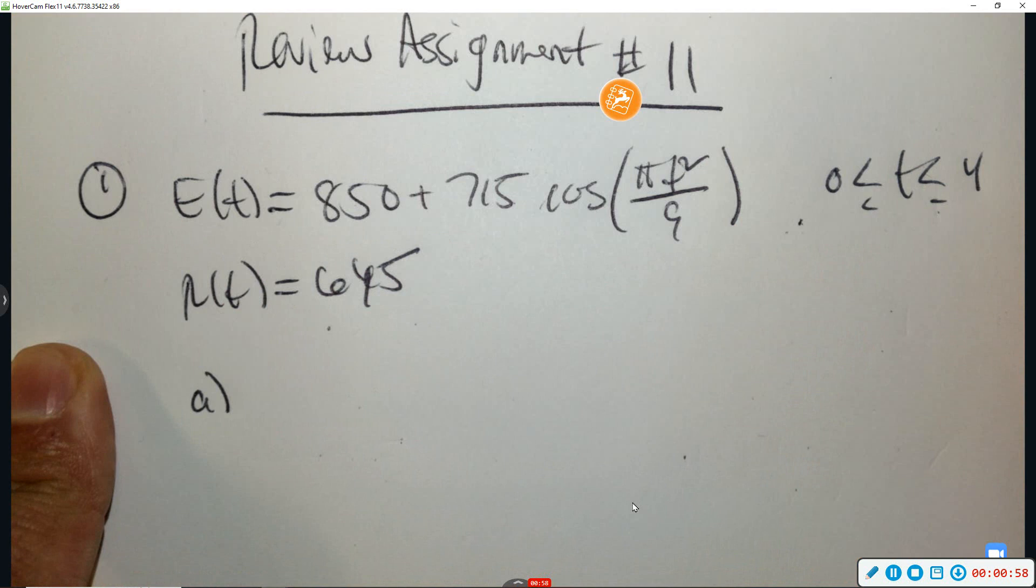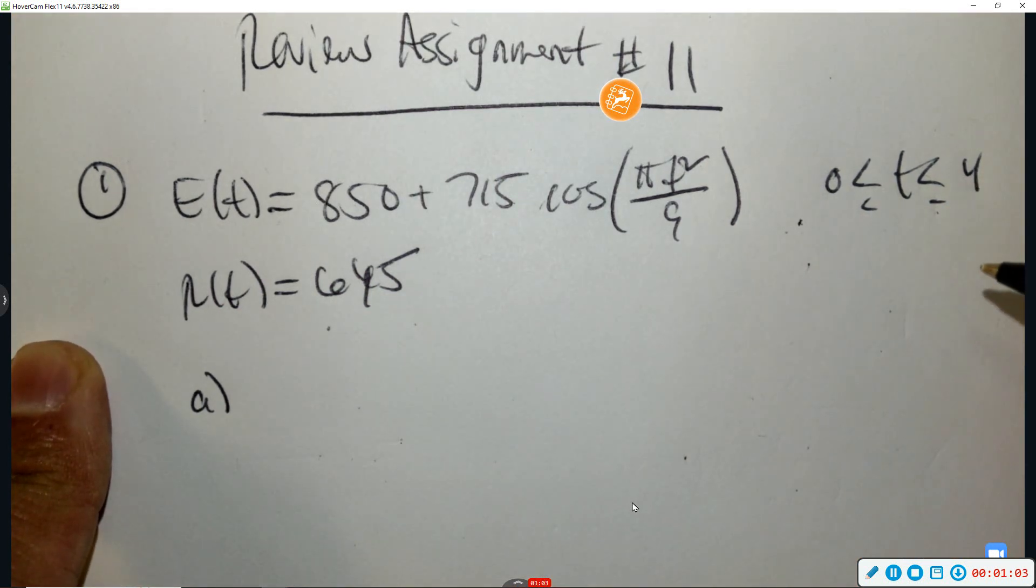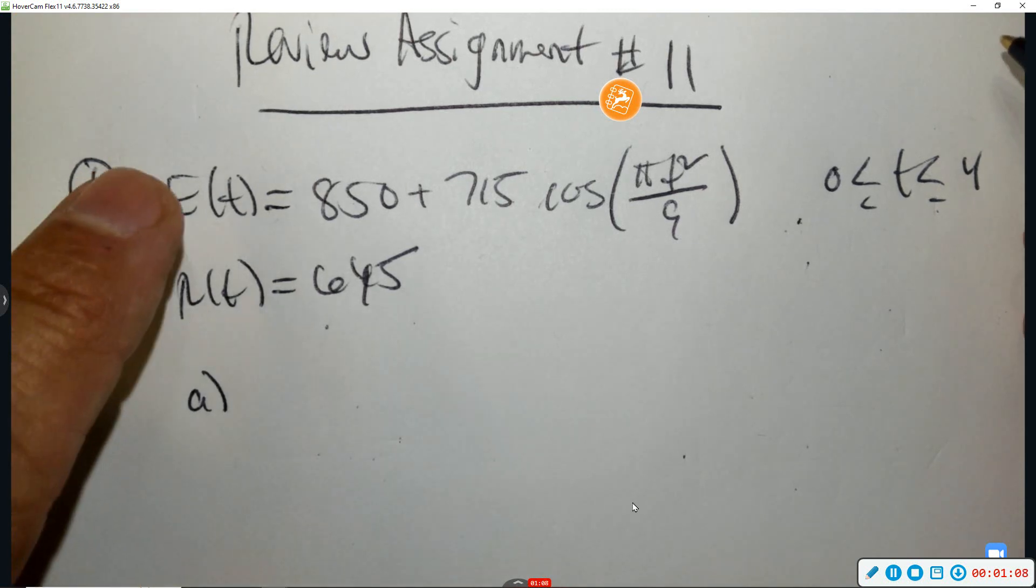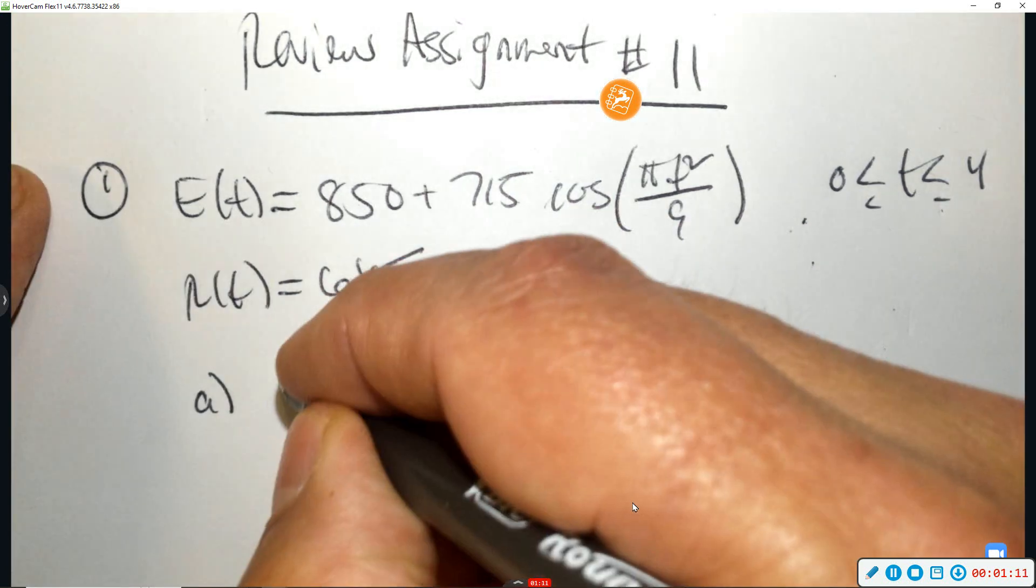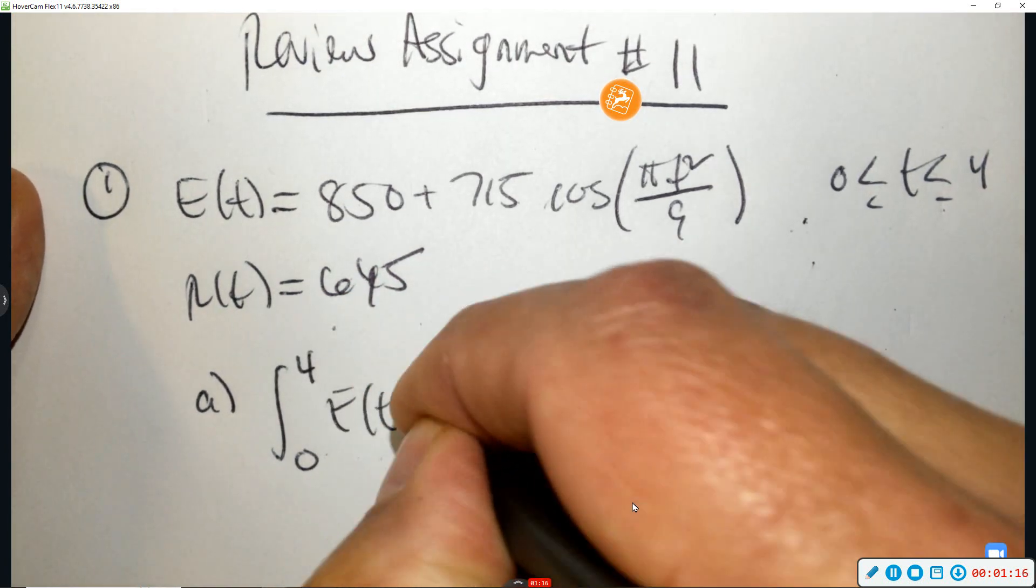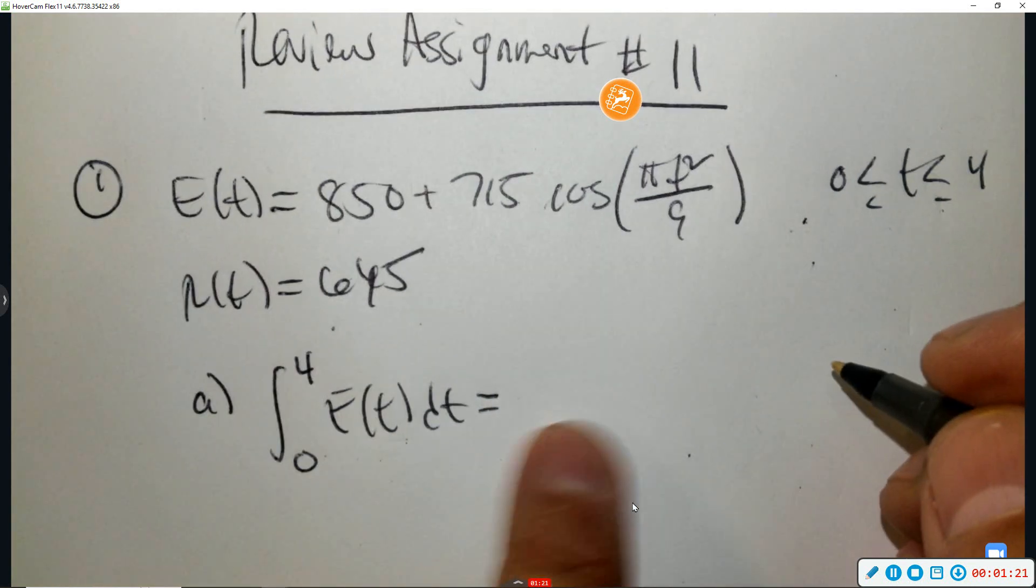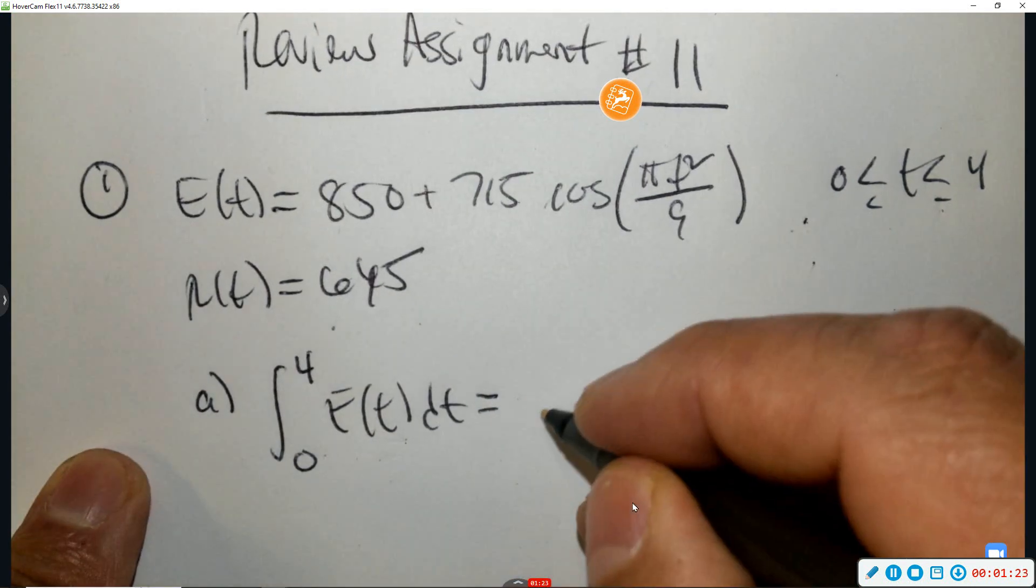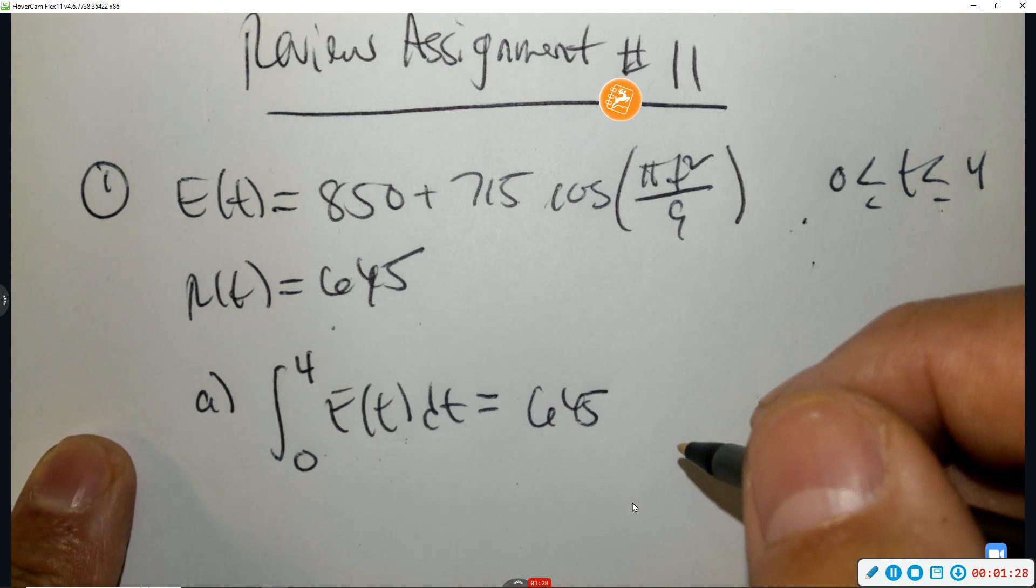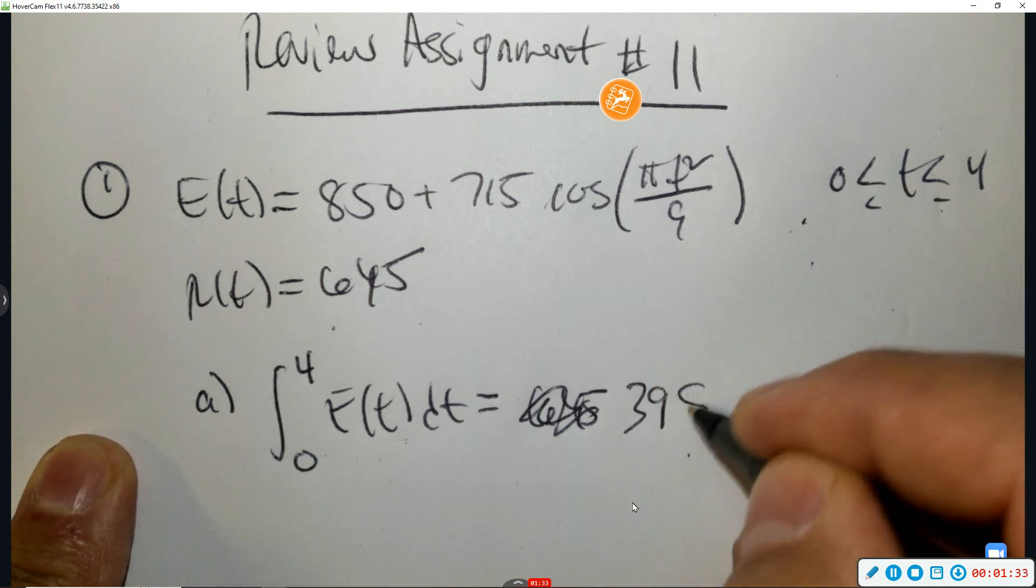Part A, the tank is empty at zero. How many gallons of sewage enter the treatment from zero to four? So to know how much has entered, you take the rate and you integrate it. So we're going to integrate from zero to four. Then type that in your calculator from zero to four. Press pause and see if we get the same answer. To the nearest gallon, I get 3,981 gallons.